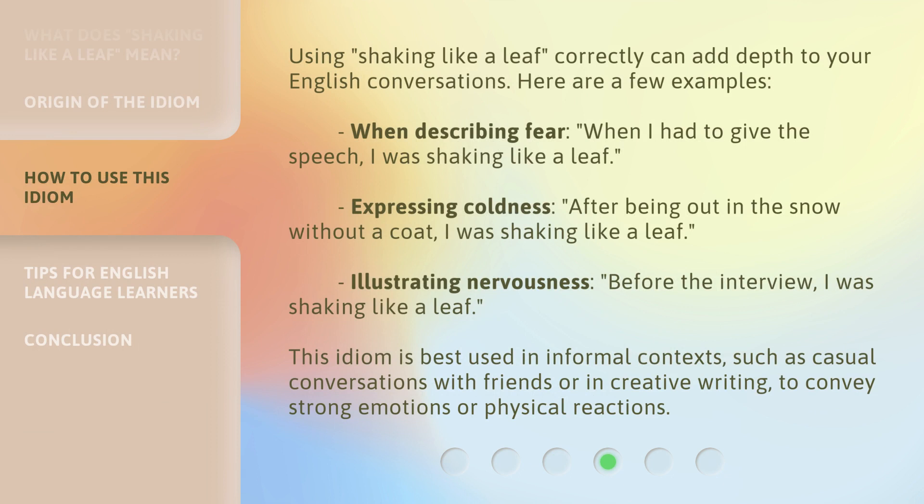Using shaking like a leaf correctly can add depth to your English conversations. Here are a few examples. When describing fear: when I had to give the speech, I was shaking like a leaf. Expressing coldness: after being out in the snow without a coat, I was shaking like a leaf. Illustrating nervousness: before the interview, I was shaking like a leaf. This idiom is best used in informal contexts, such as casual conversations with friends or in creative writing, to convey strong emotions or physical reactions.